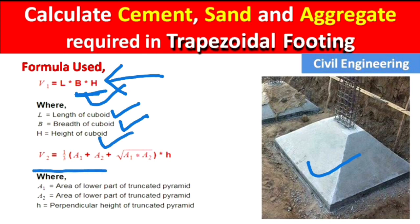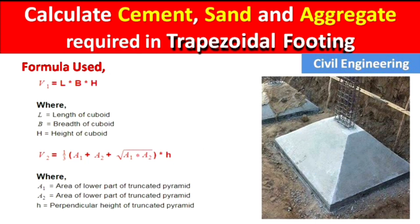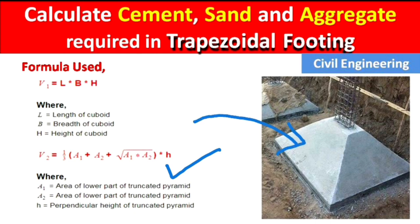The second formula is V2 = (1/3) × (A1 + A2 + √(A1 × A2)) × H. Here A1 is the area of the lower part of the truncated pyramid and A2 is the area of the upper part of the truncated pyramid.